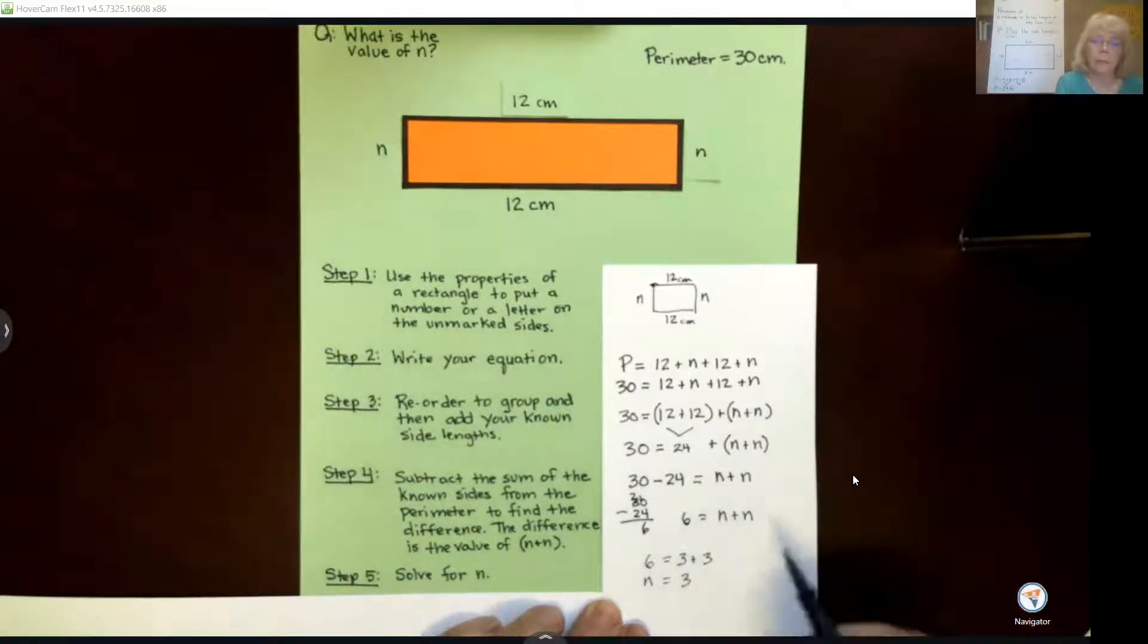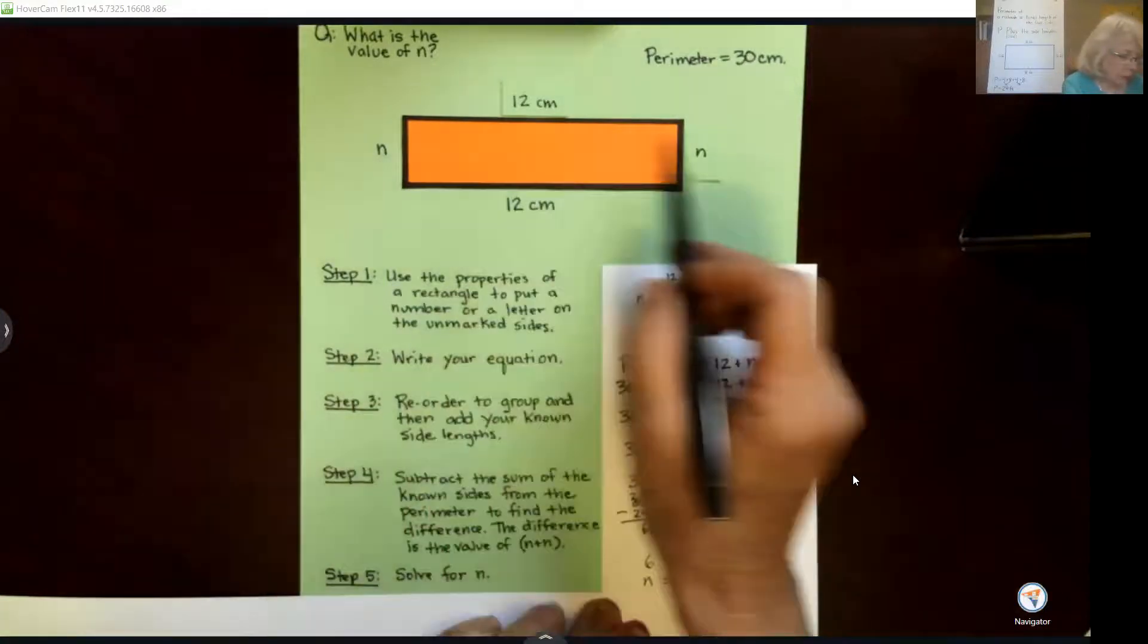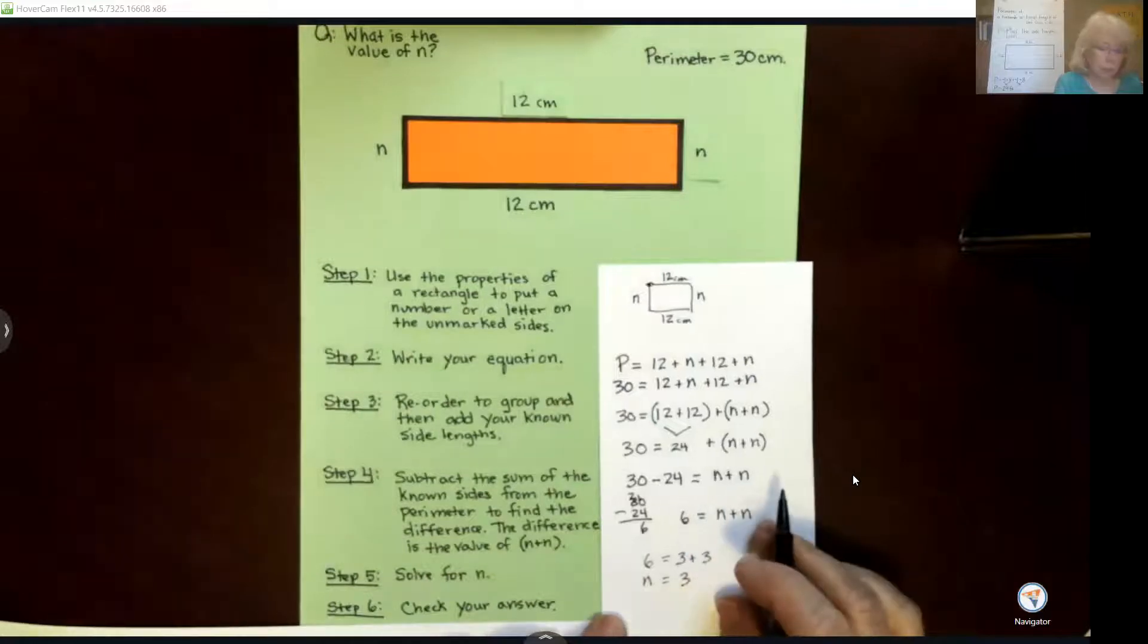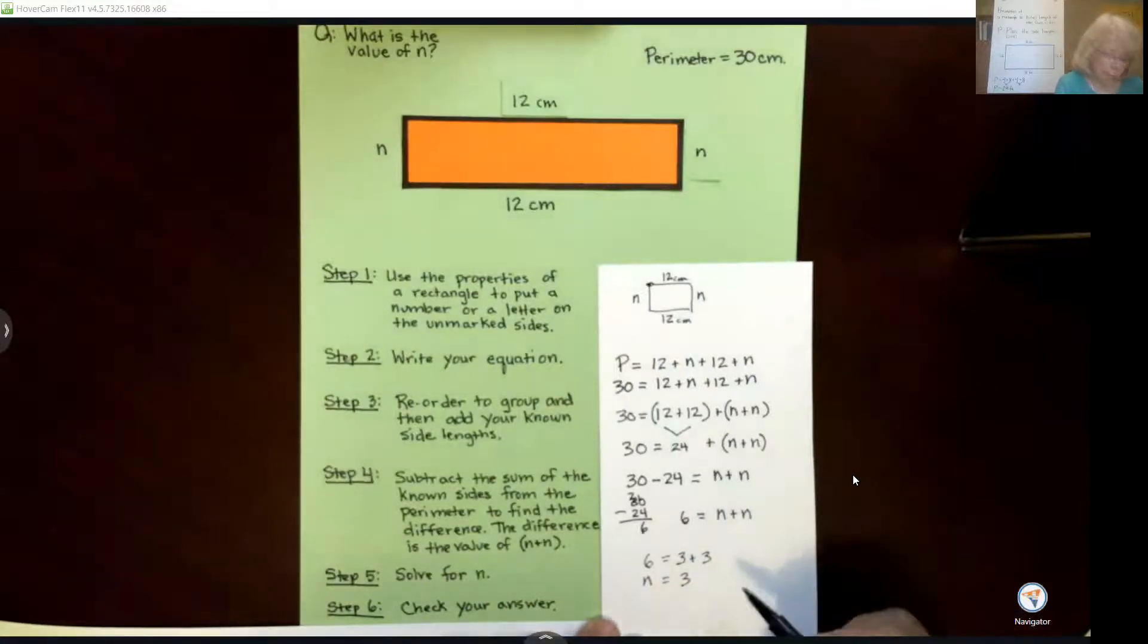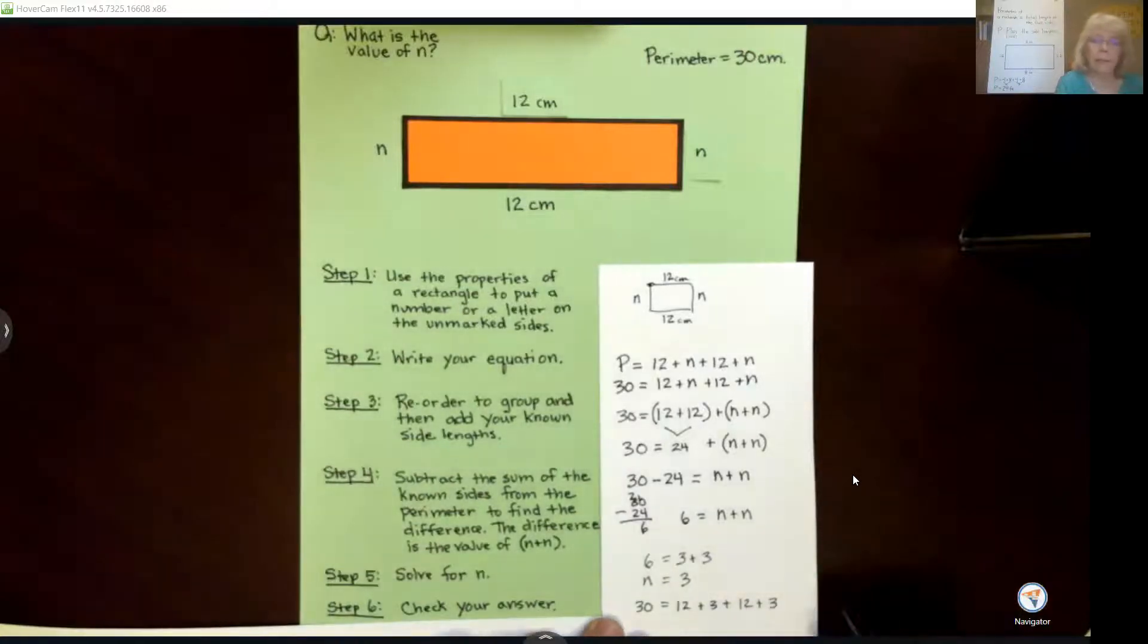And we would figure out that's our last step for solving. We're going to solve for n, and this only works if we say 6 equals 3 plus 3. So n equals 3. So it's important to remember that n doesn't equal 6. We have two n's, so n equals 3. And we can check our answer by going back to all of our sides and see, does it work? Is it true that 30 is equal to 12 plus 3 plus 12 plus 3? And if you add that all together, you'll see yes it does work. So that's great.